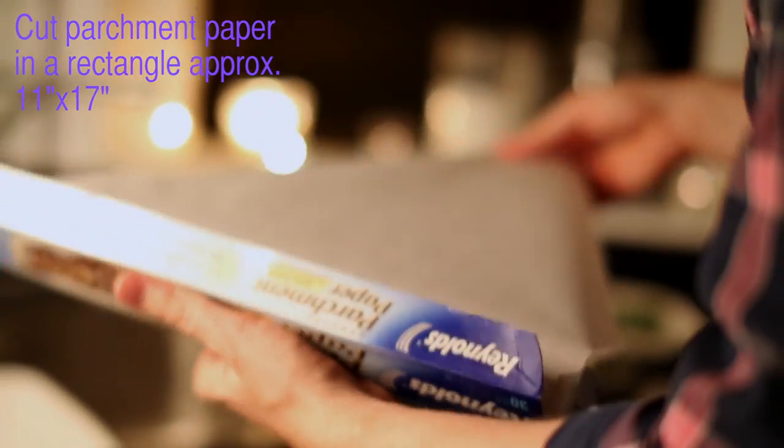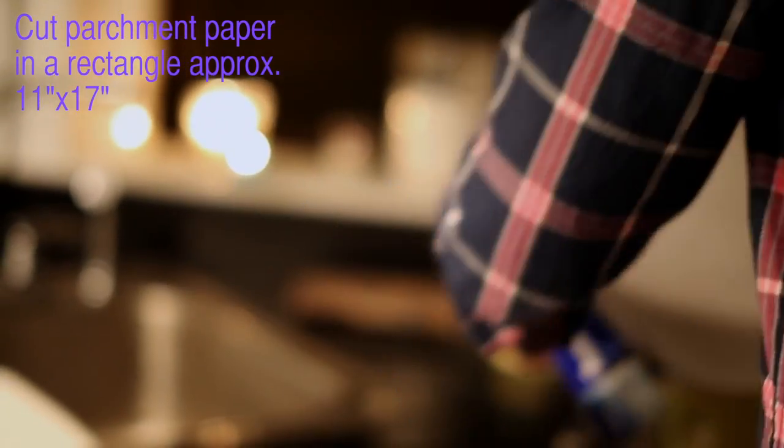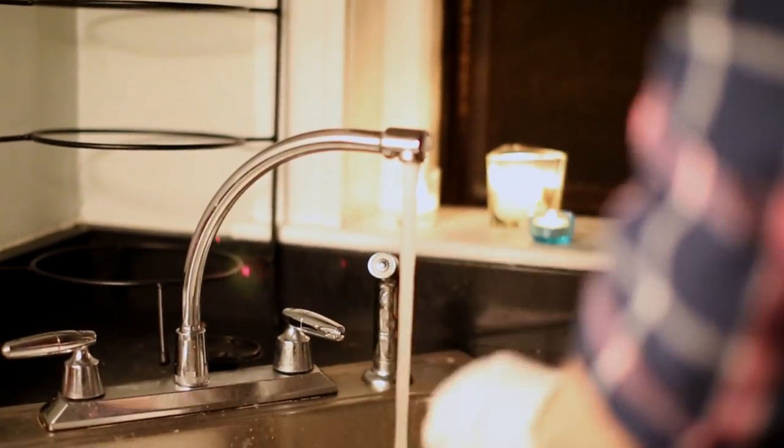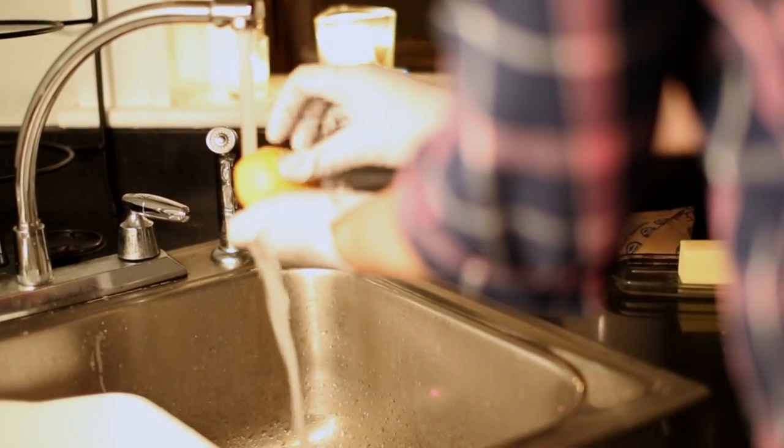The next thing we need to do is we've got to get our parchment. Now when we make cartoccio, we put it all into a bag so that it keeps the juices in. After we get the water boiling and the parchment cut, we're going to wash off our potatoes. Make sure you take any stickers off.